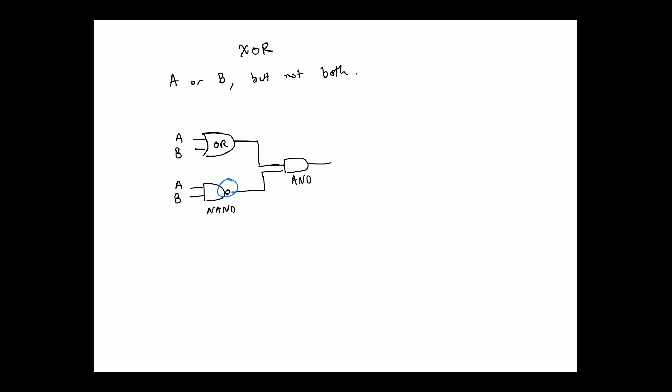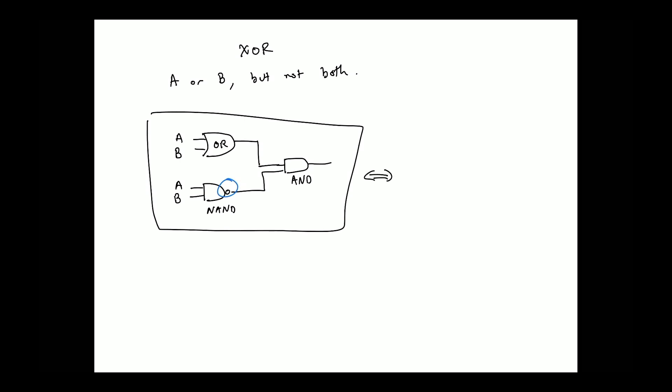So collectively, this entire thing is equivalent to an XOR gate. An XOR gate is like an OR gate but it has an extra sort of thing at the back — that's the symbol we use for it.